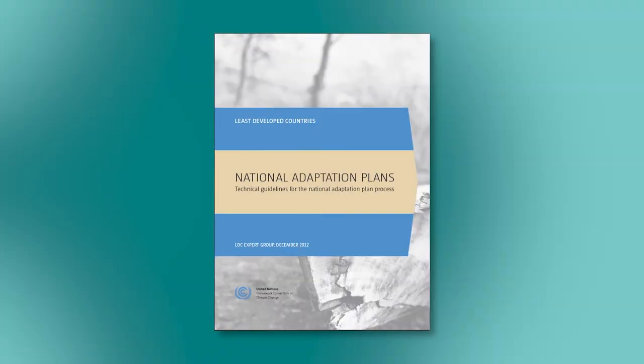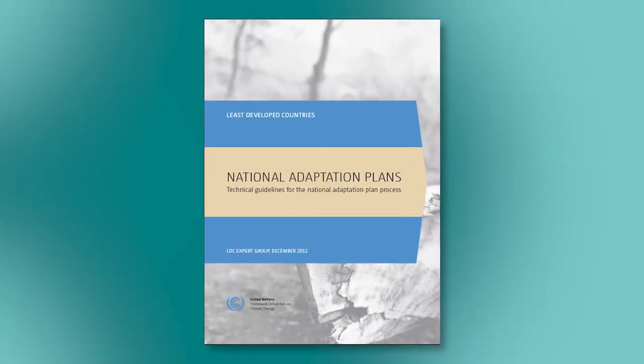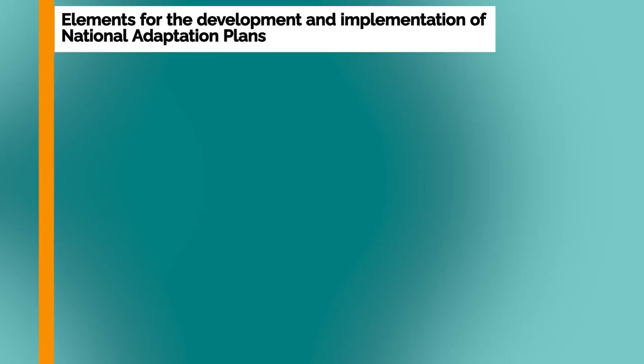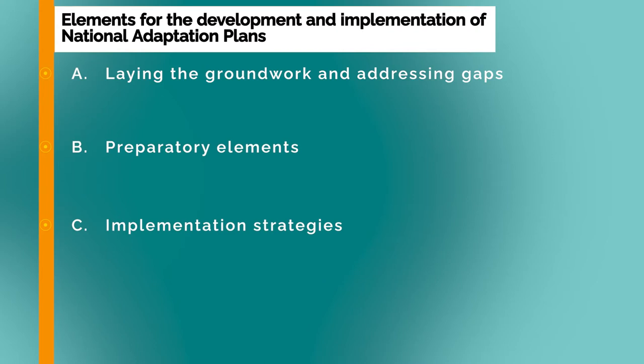Let's look at an overview of the NAP process in detail by referring to the NAP technical guidelines. The NAP technical guidelines identify four elements for the development and implementation of national adaptation plans: A, Laying the groundwork and addressing gaps; B, Preparatory elements; C, Implementation strategies; and D, Reporting, monitoring, and review.